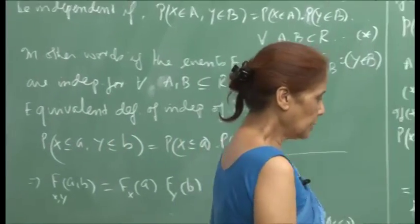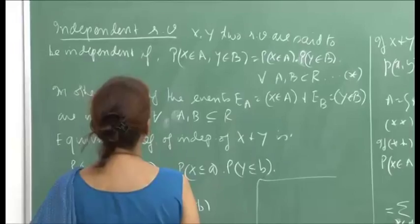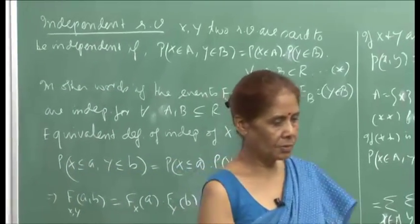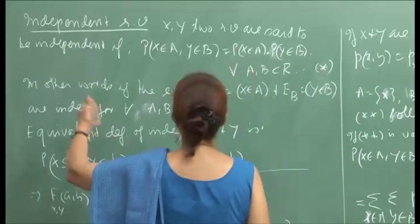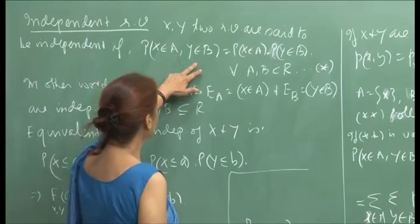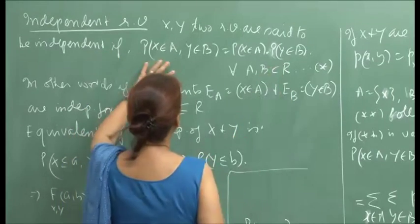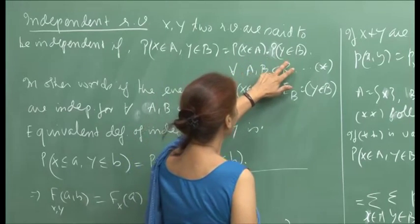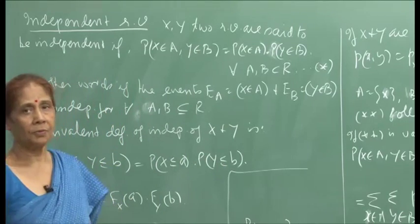I will start by talking about independence of random variables when they are jointly distributed — just an extension of the same concept for single random variables. One can write it in two or three ways: x belongs to A and y belongs to B, where A and B are two subsets of the real line. The probability should be equal to probability of x belonging to A times probability of y belonging to B, and this should hold for all possible subsets A, B of R.